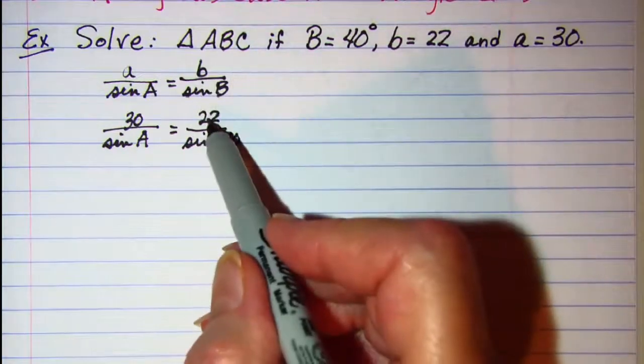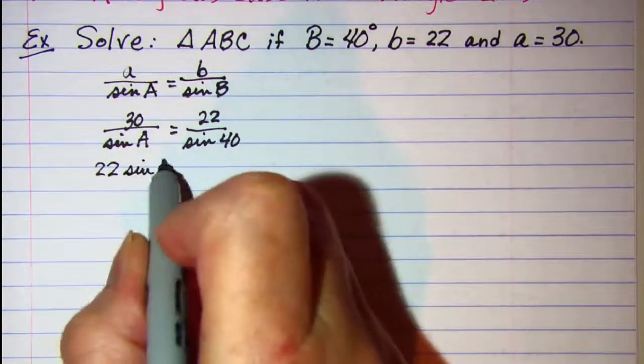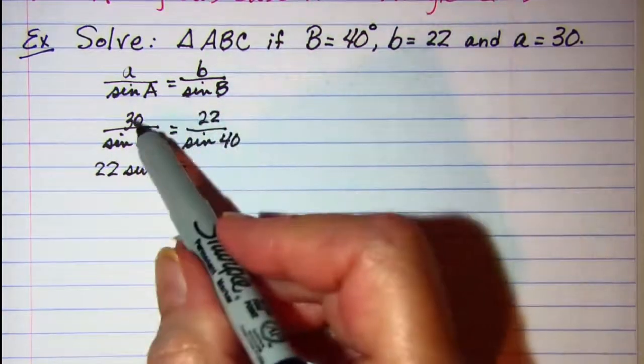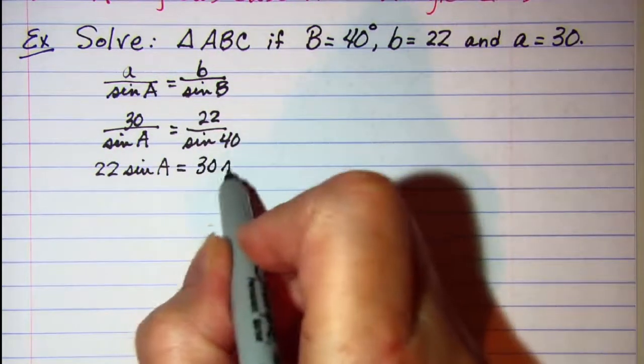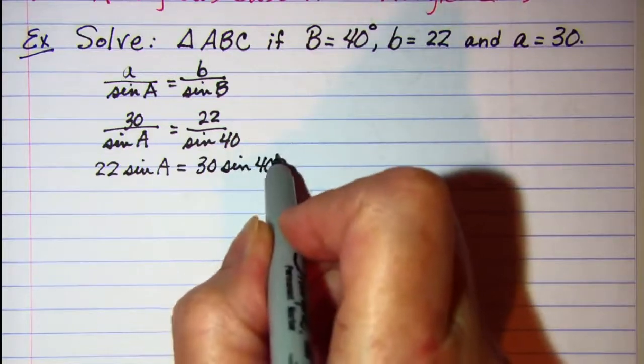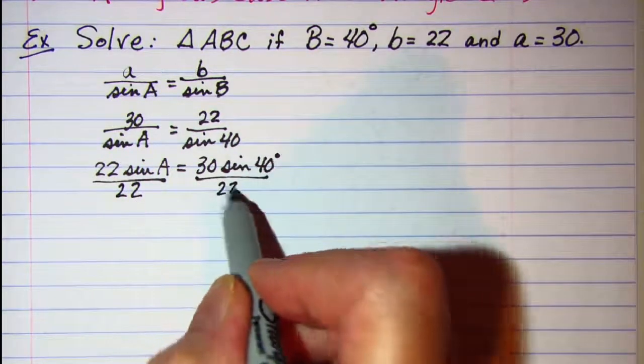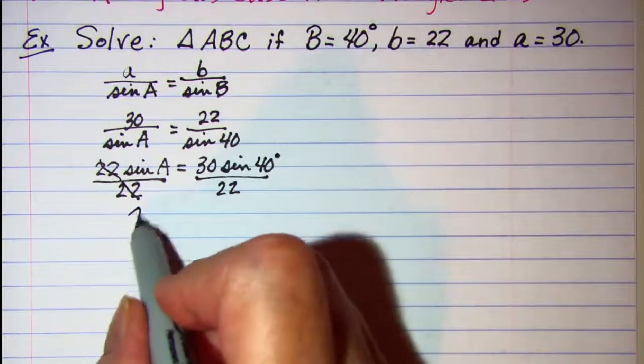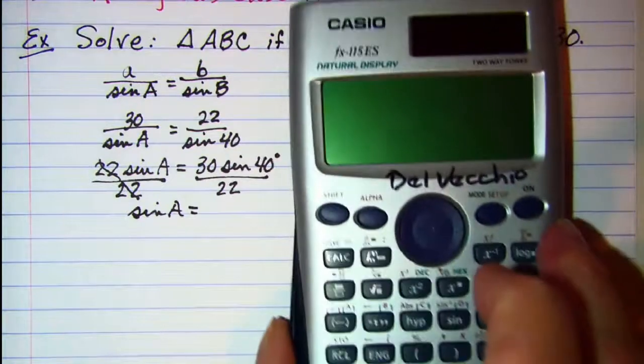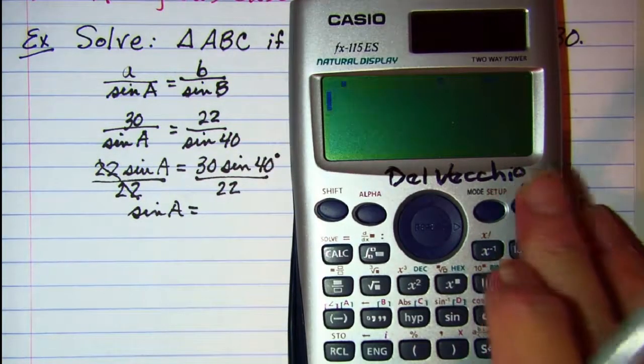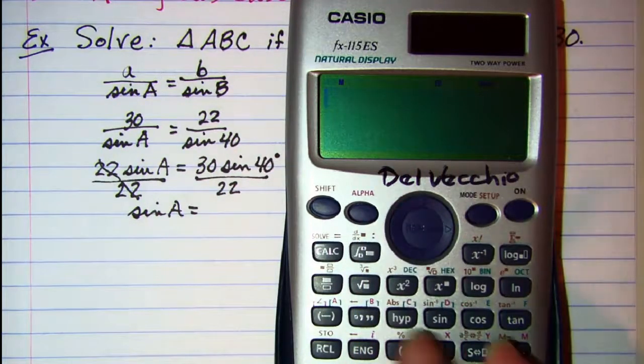Now we'll do our cross multiplication: 22 times the sine of A is equal to 30 times the sine of 40. Divide both sides by 22, these will cancel and we have sine of A is equal to, make sure you're in degrees, open the numerator.